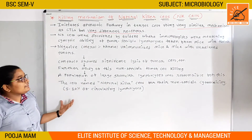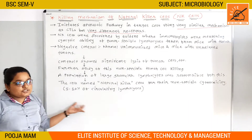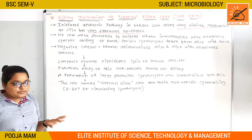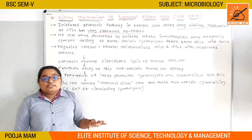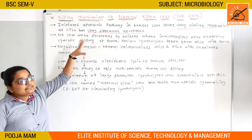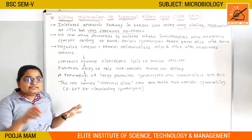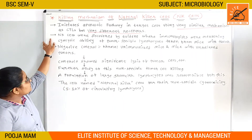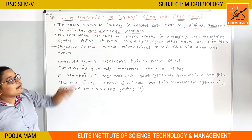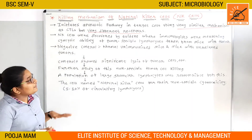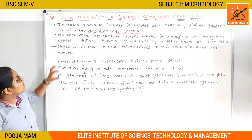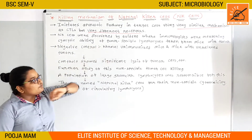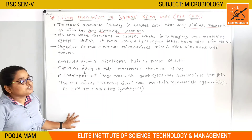So the very much difference is in the receptors that recognize the virus-infected cell. Natural killer cells were discovered accidentally by immunologists who were measuring the cytotoxic ability of tumor-specific lymphocytes taken from mice with tumors.